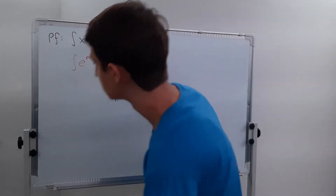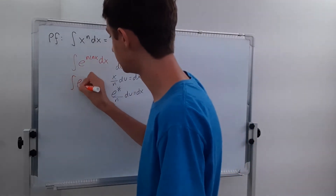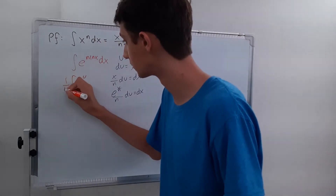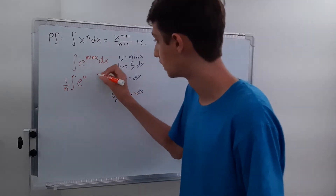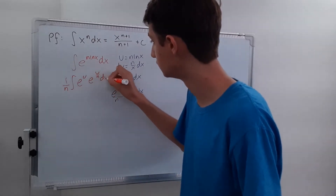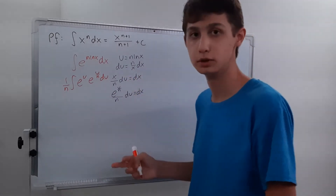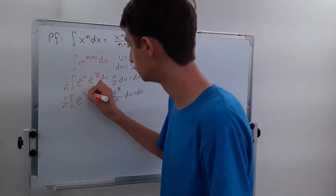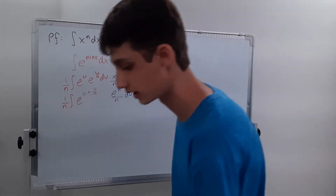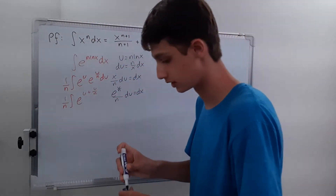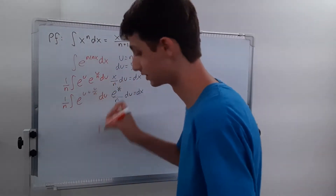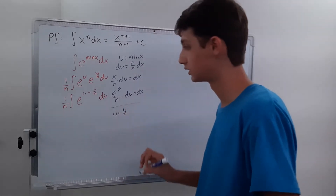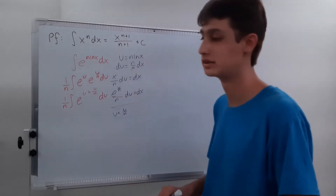Let's plug everything back in. We have the integral of e to the u times, factoring 1 over n out front, e to the u over n du. So we now have 1 over n times the integral of e to the u plus u over n. We can add those exponents together, giving e to the u plus u over n du. Let's simplify that exponent on the side.